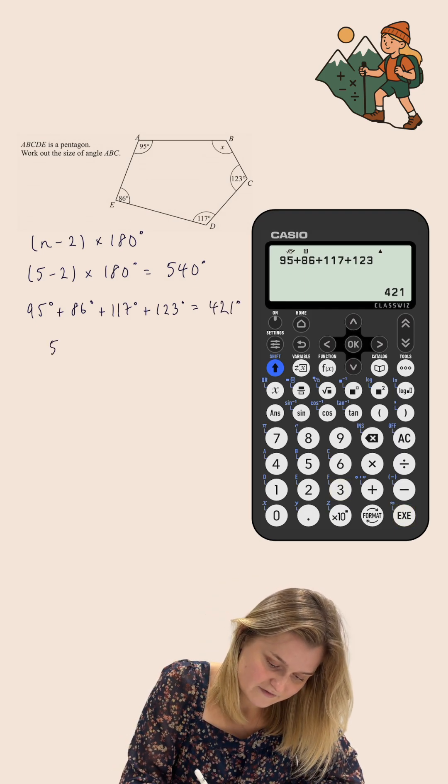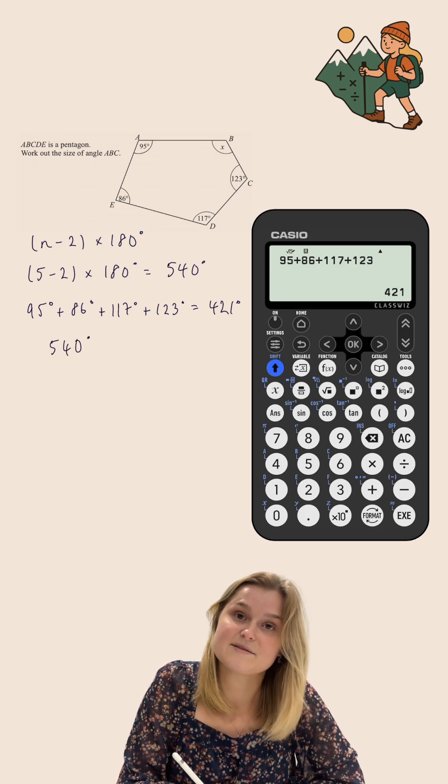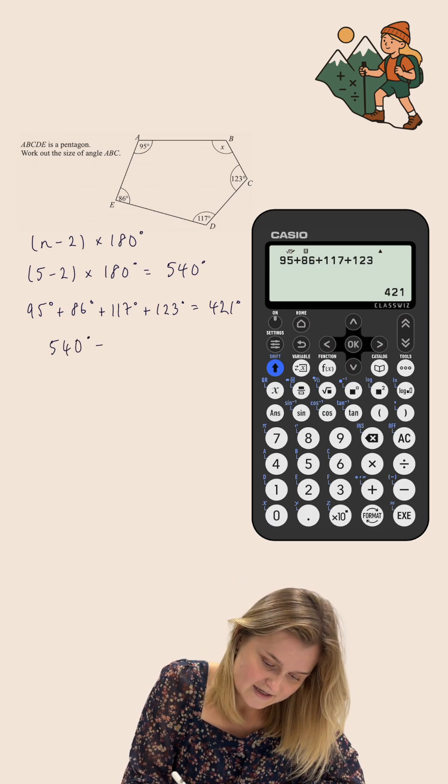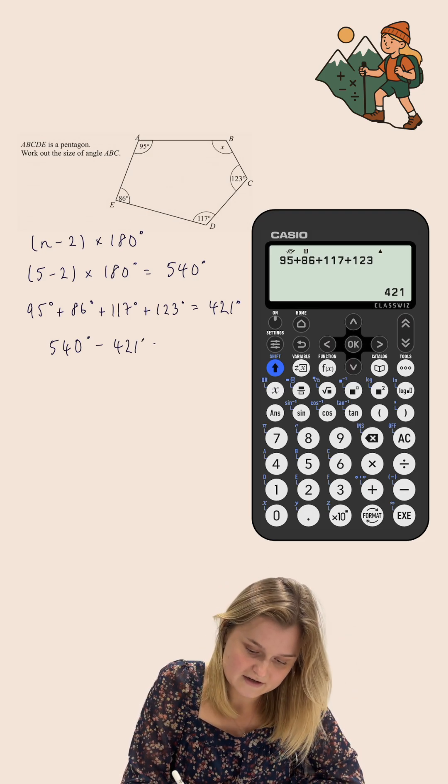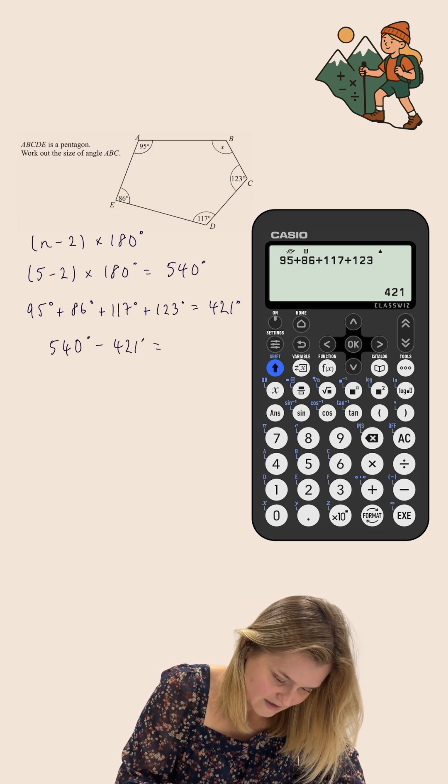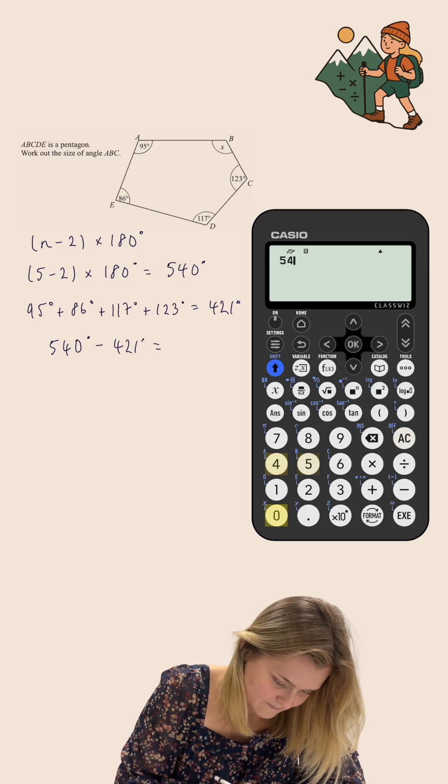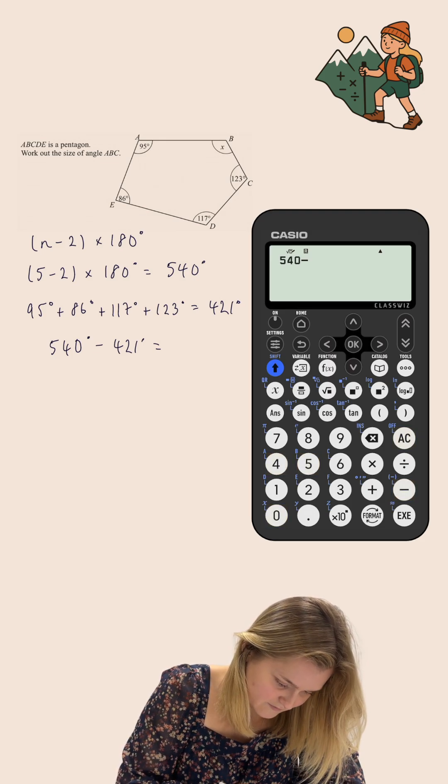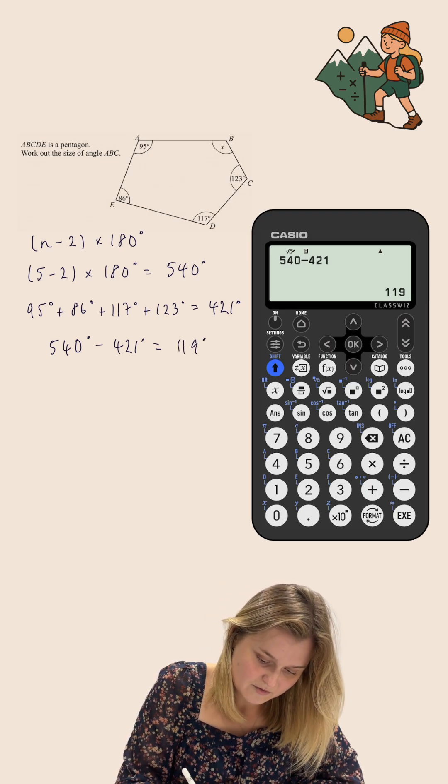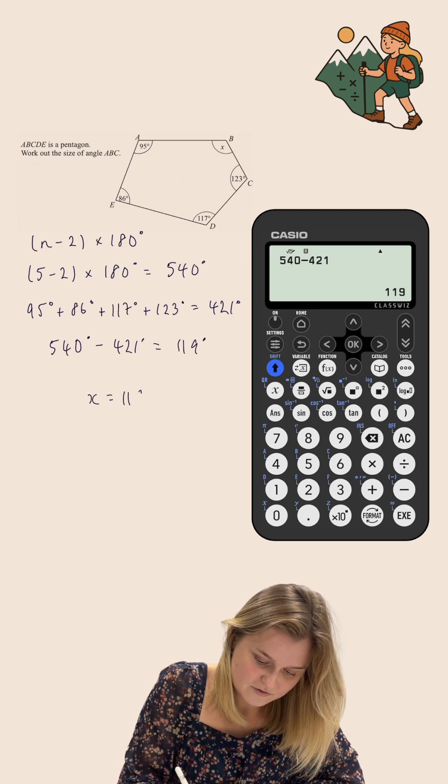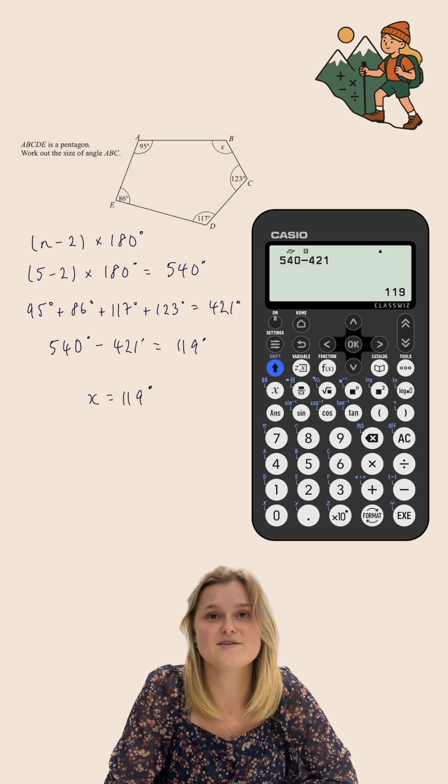And the final thing I need to do is 540 degrees, that's what the angles should add up to, take away 421 degrees, that's what my angles currently add up to. And if I do that, 540 subtract 421, it gives me 119 degrees. So, I know that the angle X is equal to 119 degrees.